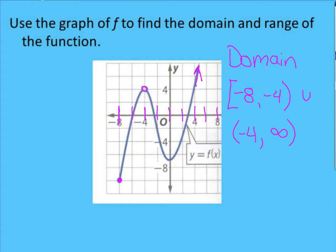For the range, we're looking at the y value. So we're looking from the bottom to the top. And if we notice, this scale is 2's. So if we come down here, our first y value that we have is at negative 10. That is still a closed circle, so it is a square bracket.